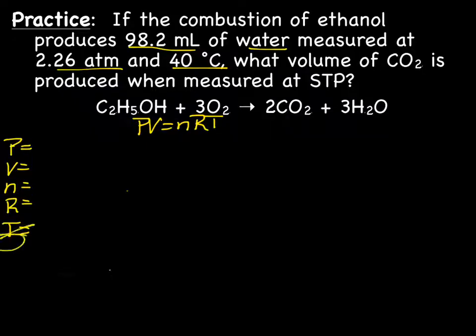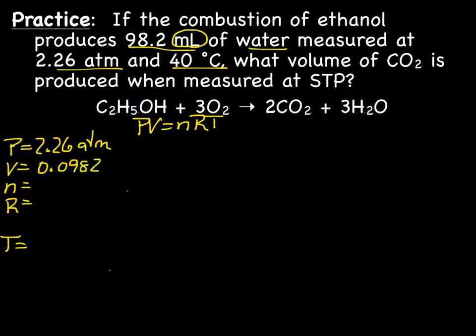Let's see what they give us. They tell us the pressure is 2.26 atm. Our volume is 98.2 milliliters, but using the ideal gas law, because of the R, we need to convert that to liters. So we'll have 0.0982 liters. We're going to try to find out the moles, and our temperature is 313 K. It's 40 degrees Celsius, which we're going to add to 273 to get Kelvin, which is 313.